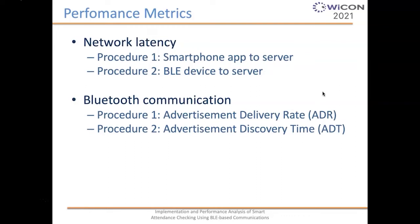The performance metrics we used include: network latency for procedure one, measured from the smartphone app to the server — considering both a local server and a remote server hosted on Heroku. For procedure two, we look at network latency from the BLE device to the server. We also look at the efficiency and scalability of the Bluetooth communication — for procedure one, the advertisement delivery rate, and for procedure two, the advertisement discovery time.